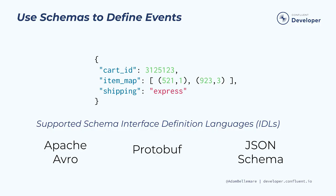Schemas as provided by interface definition languages or IDLs are essential for making event streams consistent and reliable, as well as aligning producer and consumer expectations on the format of the event data. Schemas provide structure and definition for the data communicated by the event. Just as explicit schemas are essential for constructing relational database tables, schemas are also essential for defining the structure of data in an event.